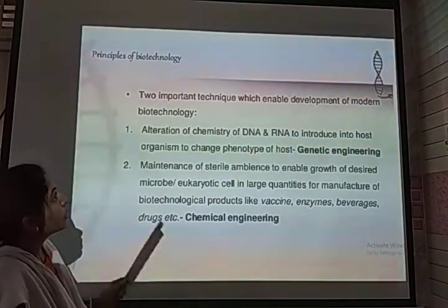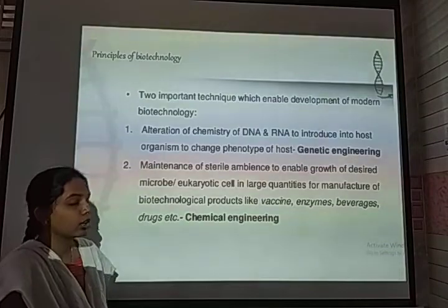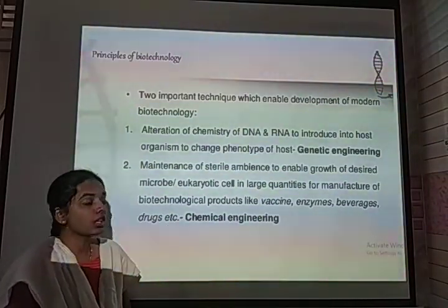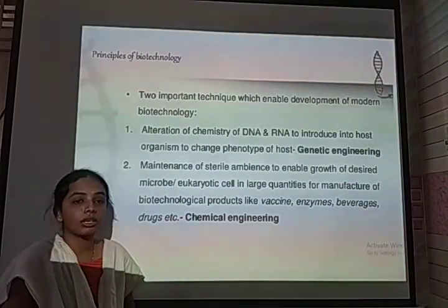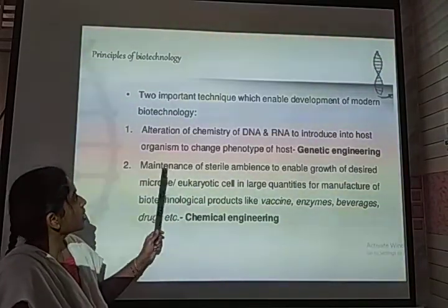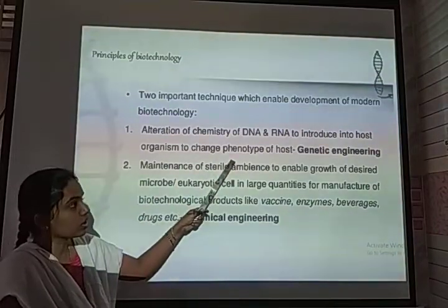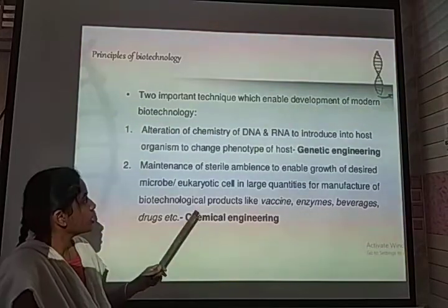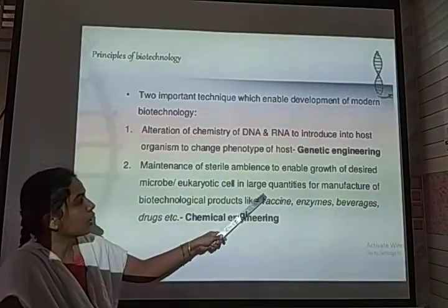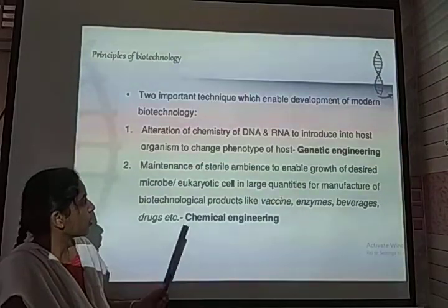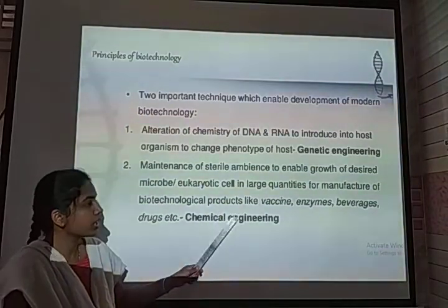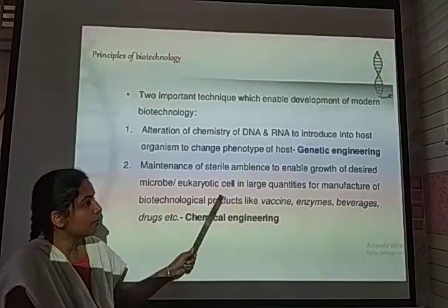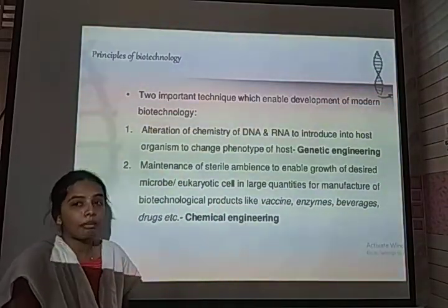There are two important techniques involved in modern biotechnology: genetic engineering and chemical engineering. Genetic engineering is the alteration in the chemical composition of genetic matter, helpful for changing the phenotype of a host organism. Chemical engineering involves the large-scale manufacturing of biotechnology products like vaccines, enzymes, and beverages by altering desirable genes in microbes.